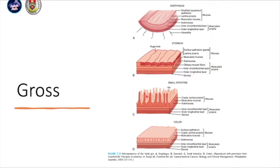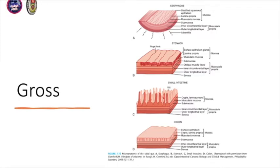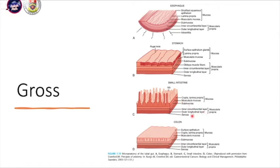As opposed to the stomach, for the small intestine, the mucosa is composed of crypts and lamina propria. The crypt architecture is what gives rise to the villi. Beneath this mucosa you have the submucosa, muscularis propria, and also serosa.